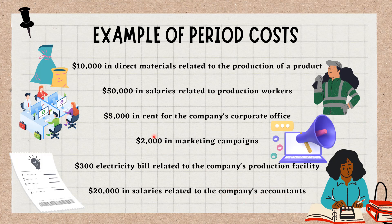Of the items above, which are period costs that should be expensed in the period incurred? Answer: $5,000 in rent for the company's corporate office, $2,000 in marketing campaigns, and $20,000 in salaries related to the company's accountants are period costs, as they do not relate to the manufacture of products. As such, the total amount of $27,000 should be expensed in the first year of operations.